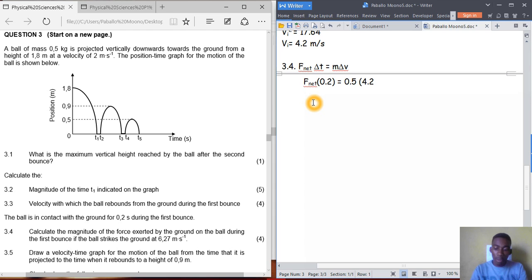So F net equals 0.5 times (4.2 minus negative 6.27) divided by 0.2. It's negative 6.27 because the ball is going down initially, which is negative, and 4.2 is positive going up. The answer is 26.18 Newtons.